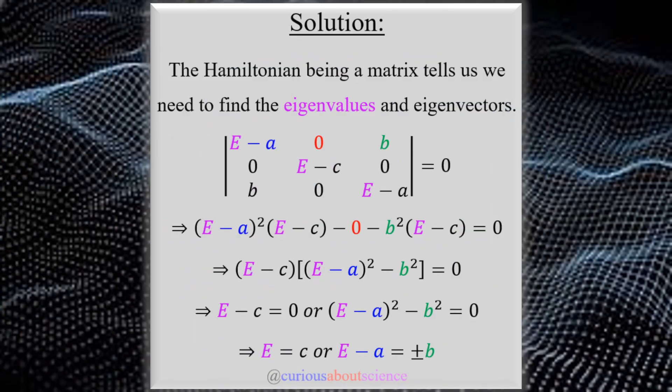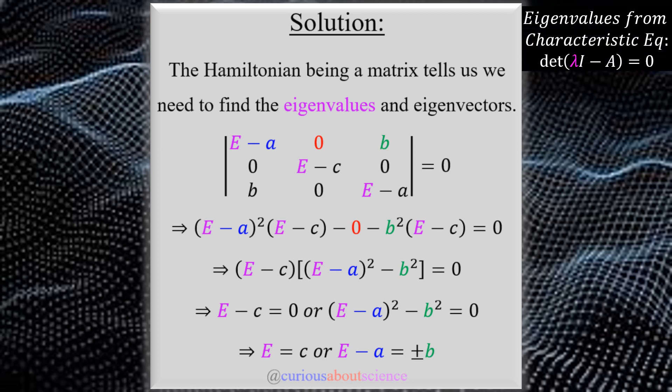The fact that our Hamiltonian is a matrix tells us we need to find the eigenvalues and thus the eigenvectors. What are the allowed eigenstates for this Hamiltonian — just like we had to find allowed states for the infinite square well? To find the eigenvalues, we apply the characteristic equation: the determinant of lambda times I minus A equals zero.